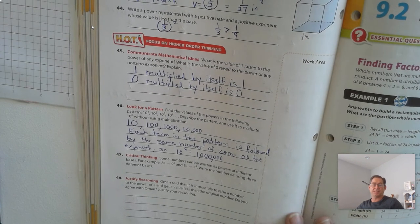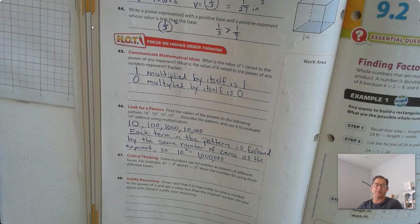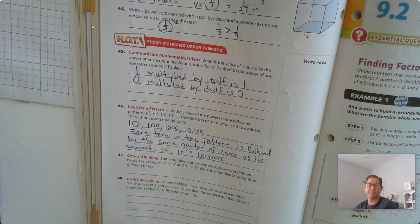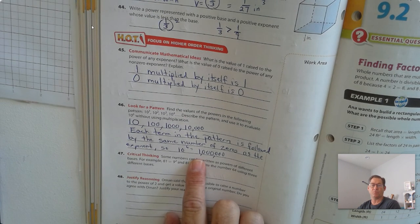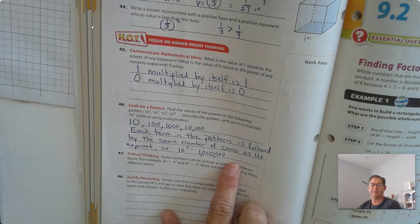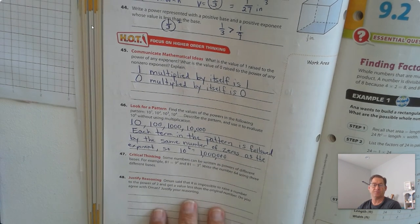Each term in the pattern is followed by the same number of zeros as the exponent. So if we have 10 to the 6th, it's going to be 1 followed by 6 zeros.